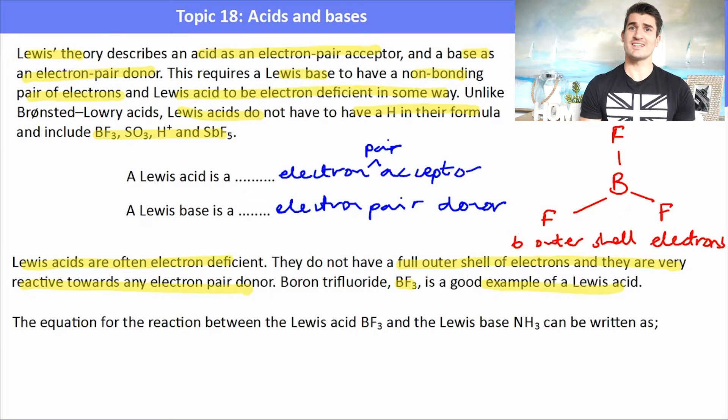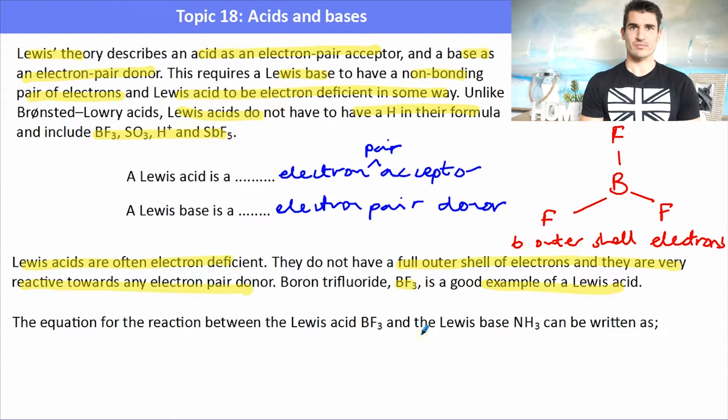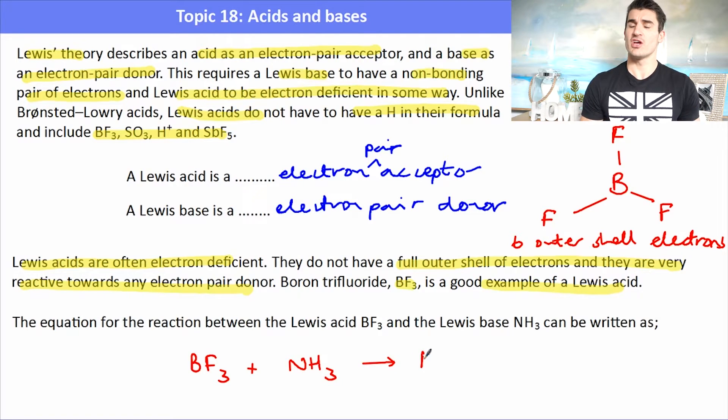So for example, BF3, it is electron deficient. It could react with NH3 which has a lone pair of electrons to form a Lewis acid-base complex. The BF3, the electron deficient species, will be the Lewis acid. The ammonia with its lone pair of electrons will be the Lewis base. So we form a Lewis acid-base complex and that's actually held together by coordinate bonding where the lone pair of electrons from the ammonia has been donated to the boron atom.